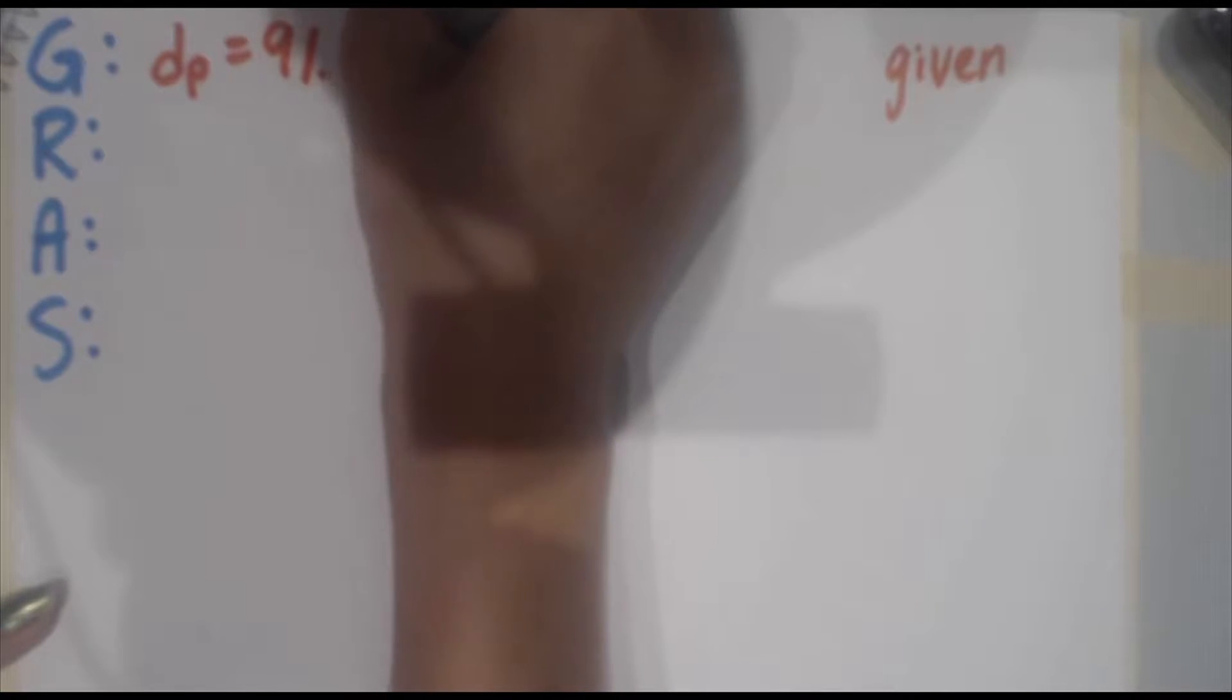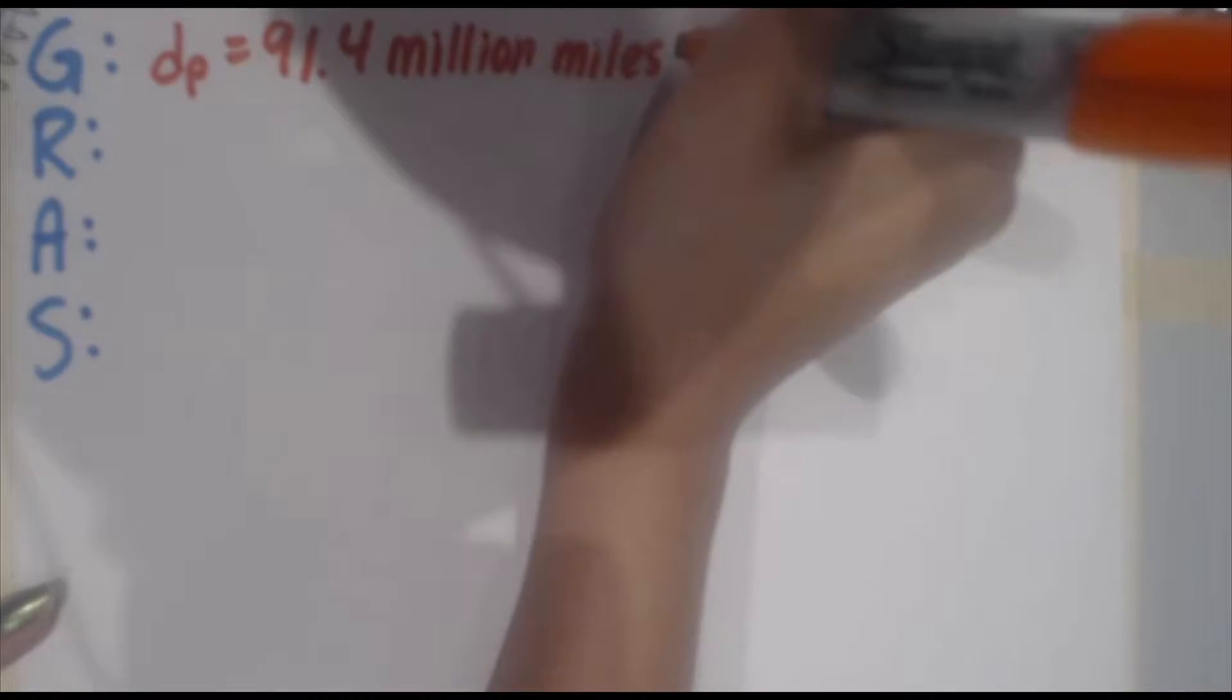The first thing you do is line up the left column with the words GRAS. The G stands for given. So what's given in the problem? We're given the distance at perihelion from the Earth to the Sun. So I'll call that D subscript P equals 91.4 million miles.